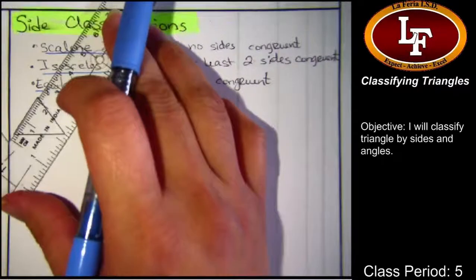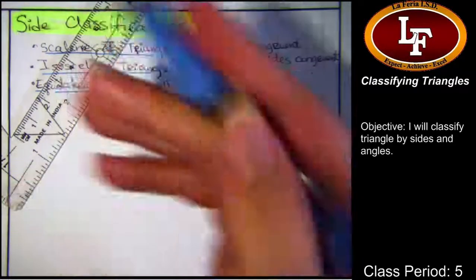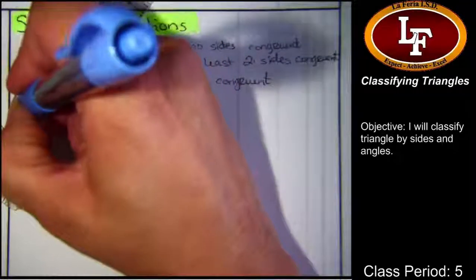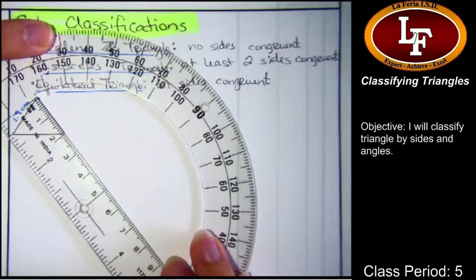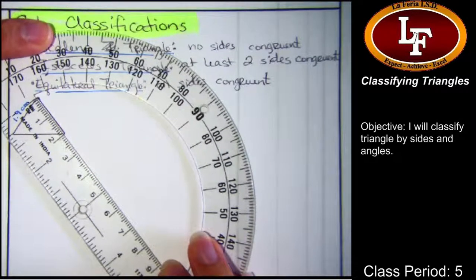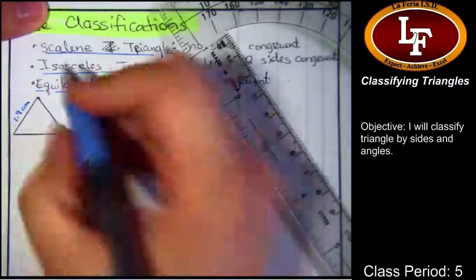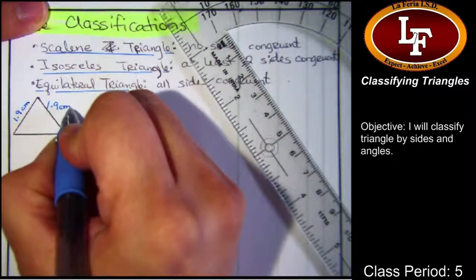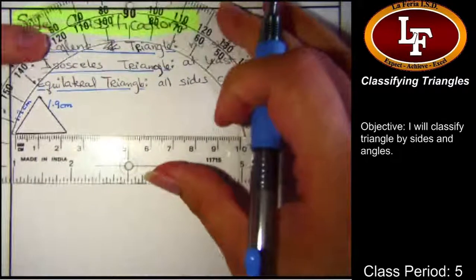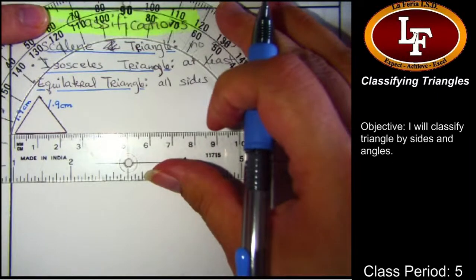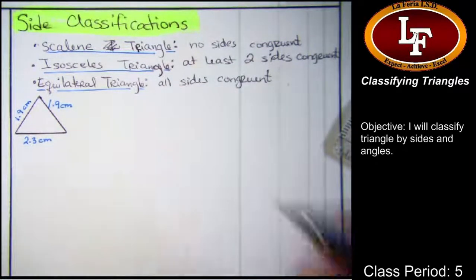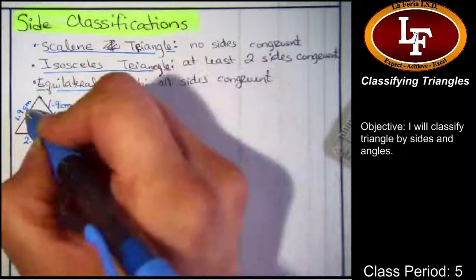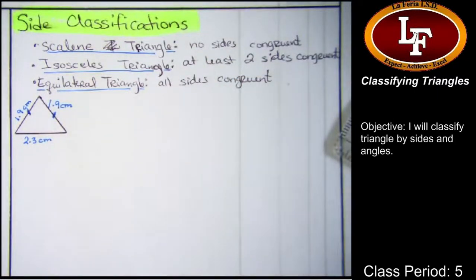So measure the side. So I'm going to measure this one. This one looks like it's 1.9 centimeters. I'm going to measure this side. Oh my goodness. This one also looks like it's 1.9. Let's do the last side. Let's see what we end up with. What kind of triangle did I end up drawing? An isosceles. I was actually trying to do an equilateral. Oh well.